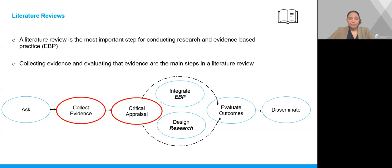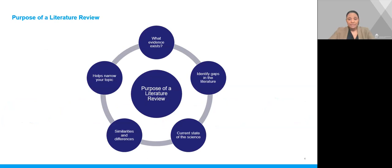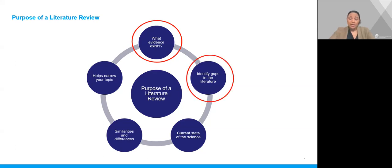Literature reviews are the most important step for conducting research and evidence-based practice. As shown in the image, collecting evidence and critically appraising that evidence are necessary steps before deciding if you're conducting an EBP project or designing a research project. The purpose of a literature review is to gain an understanding of what is known about a specific topic and also what is not known, also known as a gap in the literature. With a thorough literature review, you can come to a conclusion about the current state of the science and some of the similarities and differences about a topic.